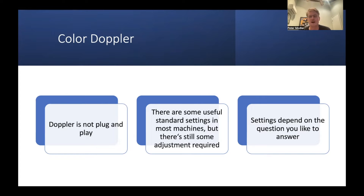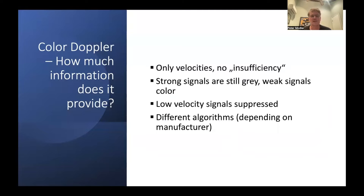I want to show you how to adjust the Doppler settings so you can see your optimal mitral valve jet. It's important to know that Doppler shows you velocities, not valvular insufficiency — it shows the velocity of blood cells. Strong signals on your machine are displayed in gray; weak signals like blood are displayed in color. Every machine tries to suppress low-velocity signals on your color Doppler, but this suppression depends on your manufacturer and uses a different algorithm in each machine.